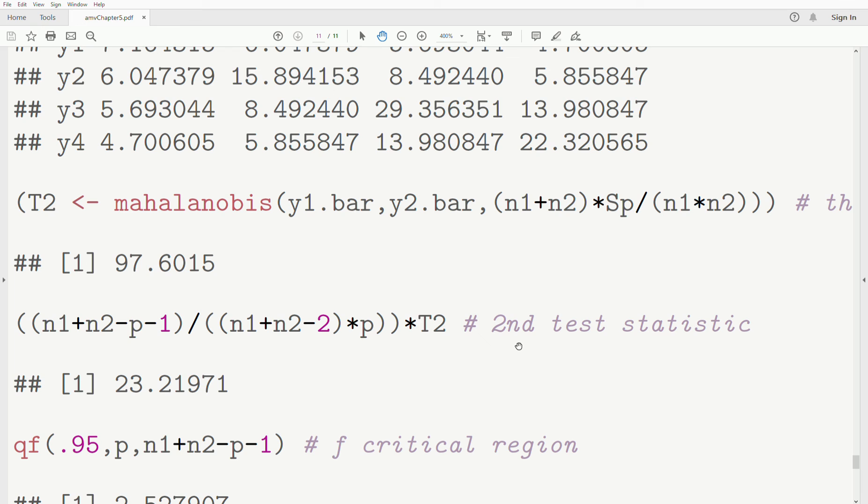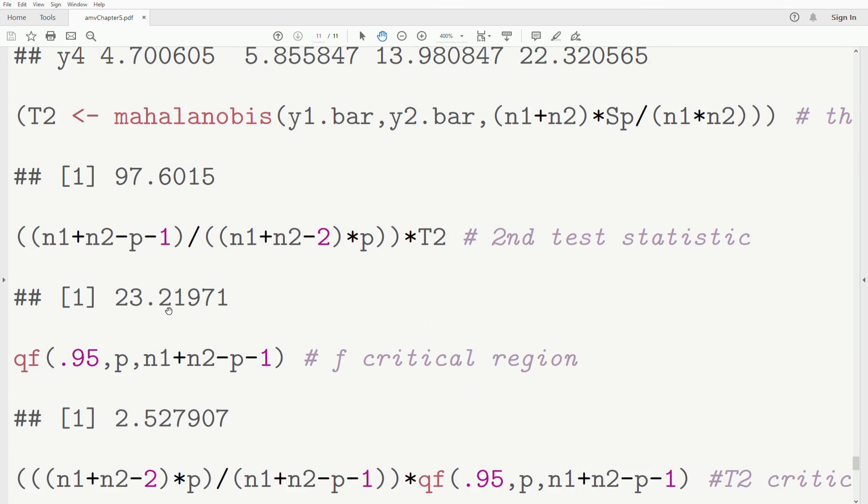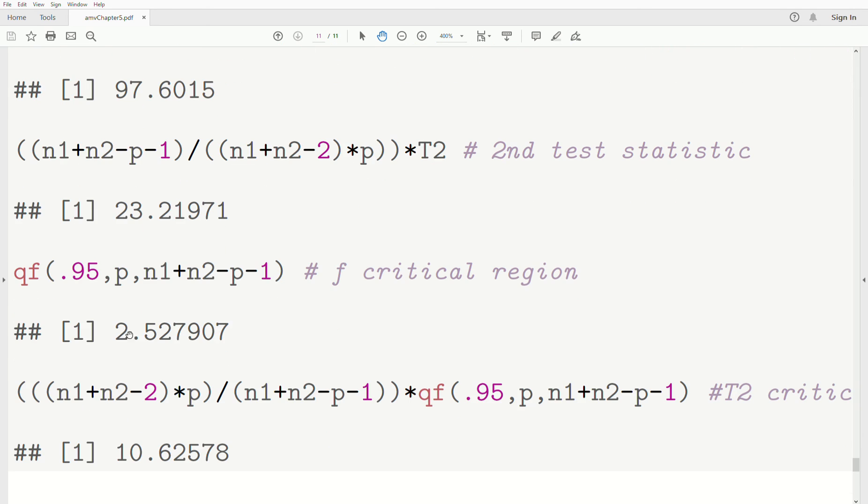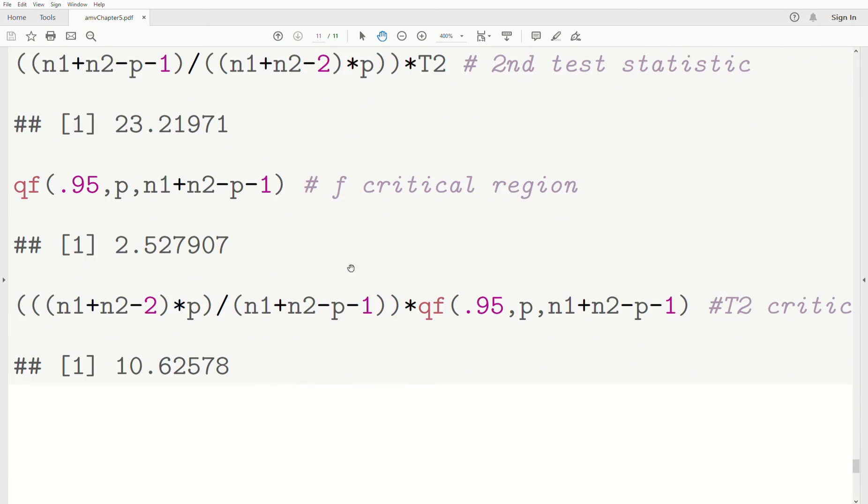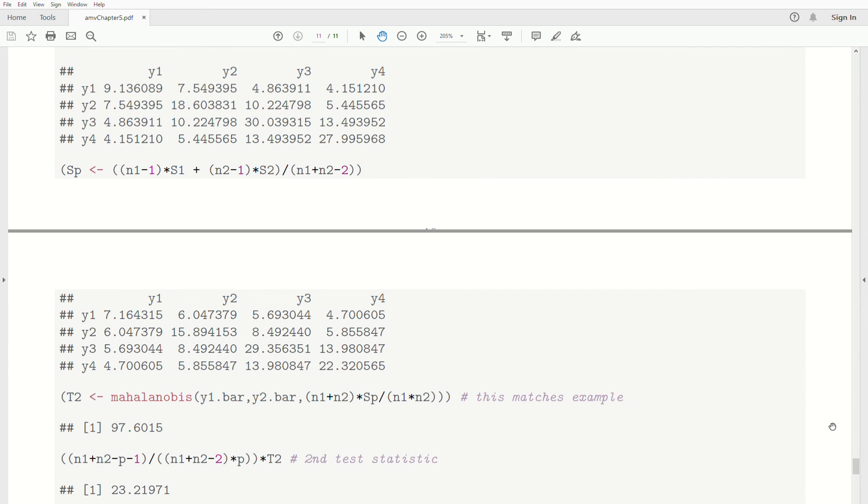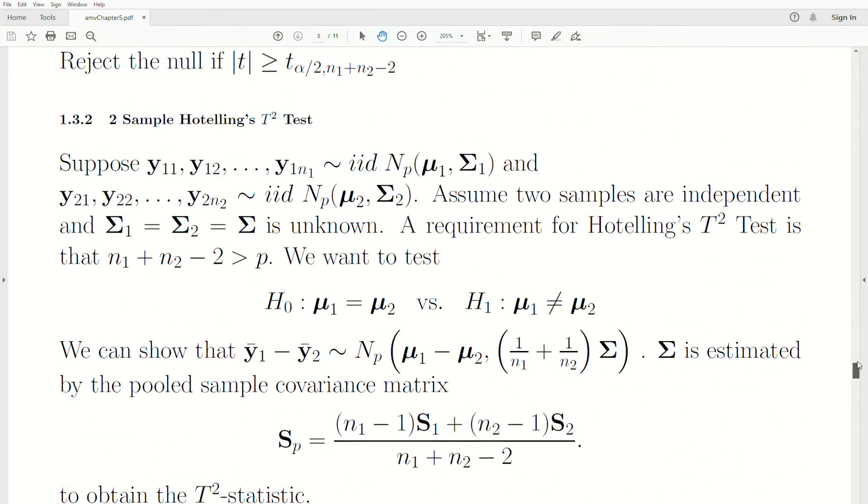This is the second test statistic that I like better. You take it times this constant and get 23.21. The critical region is in F. We want the right tail area to be 0.05, so the left tail area is 0.95. We get a critical value of 2.5. You can recalculate the T² critical value using this constant times F. Well, I'm at 12 minutes, I'm going to call this video done. I hope you enjoyed it. Please like the video and subscribe so you don't miss the next one. Thanks, bye.